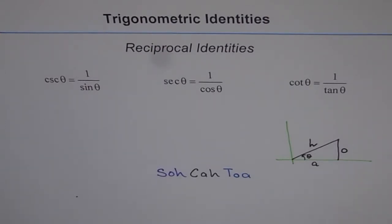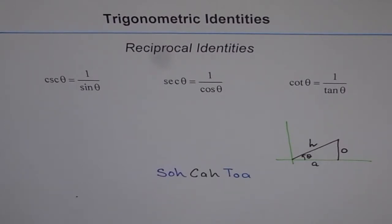Sine is opposite over hypotenuse. Cosecant is the reciprocal of sine, secant is the reciprocal of cosine, and cotangent is the reciprocal of tangent. This is how these reciprocal relations are related.